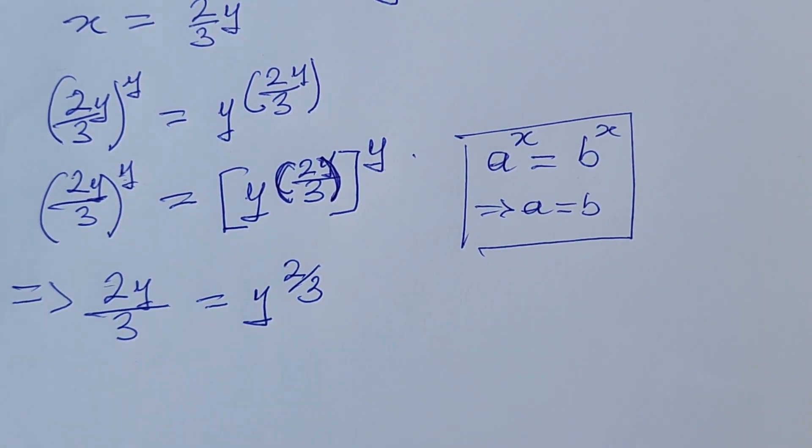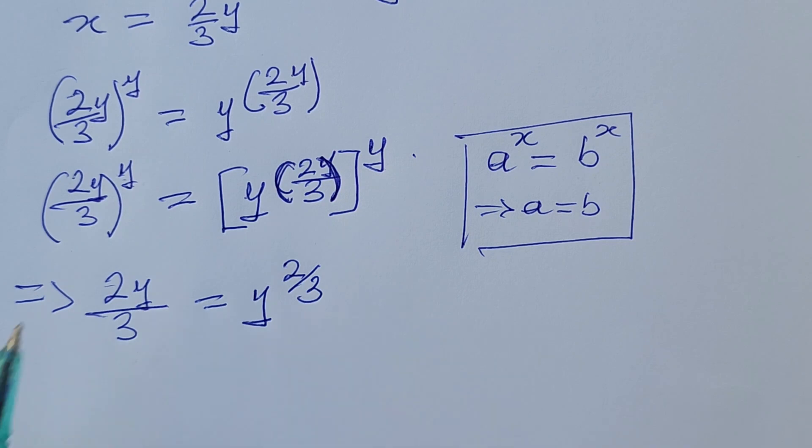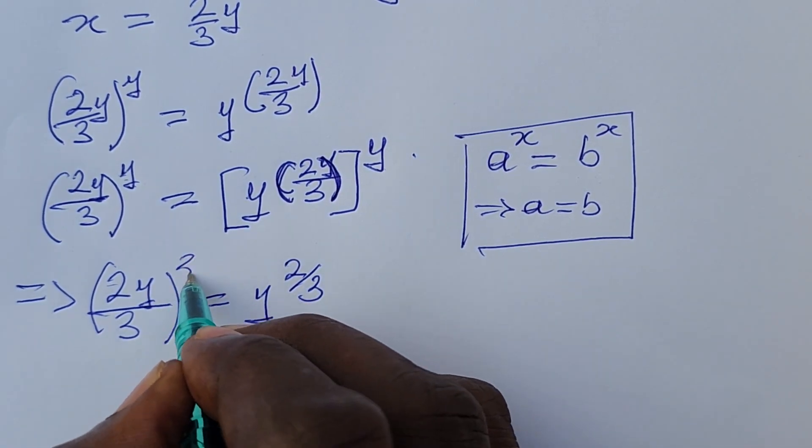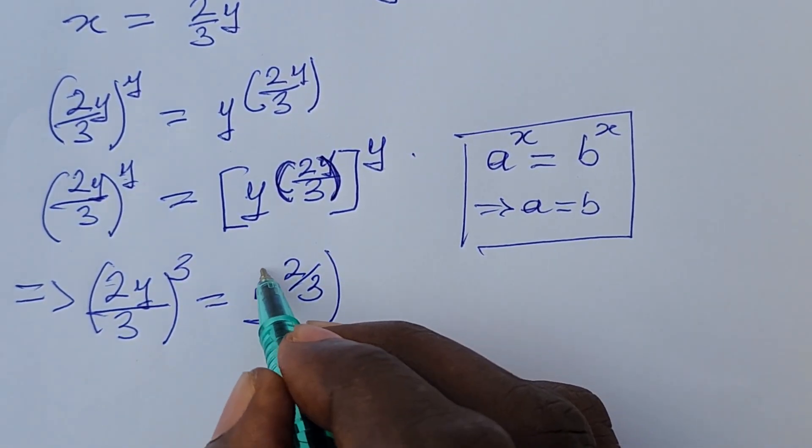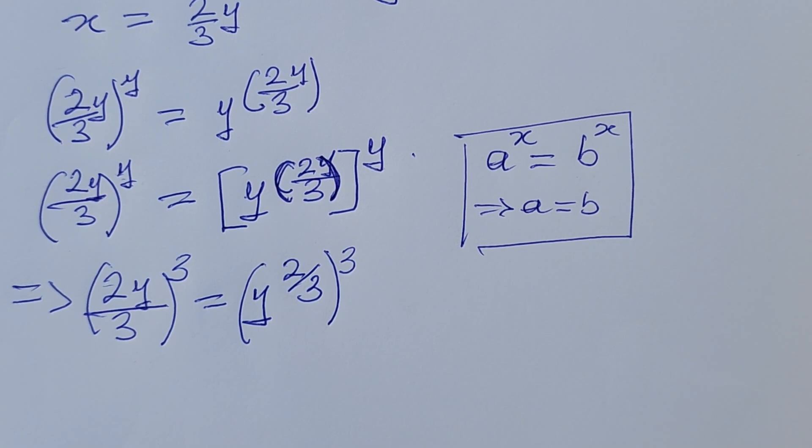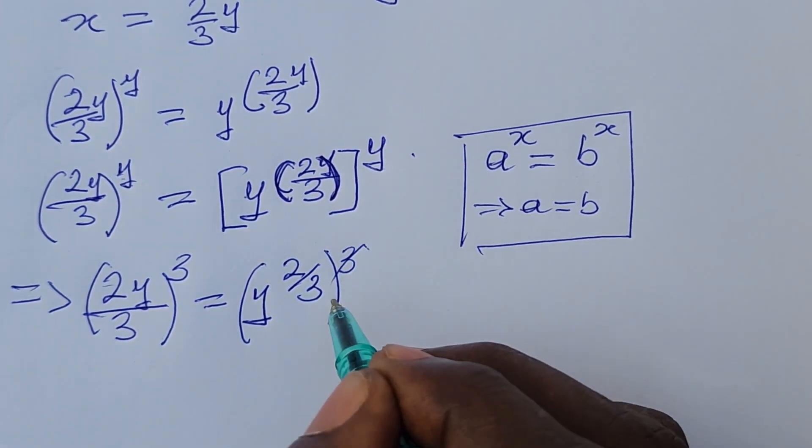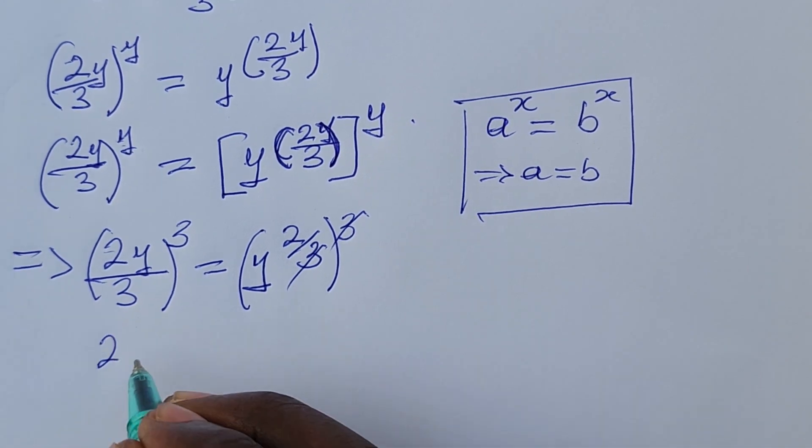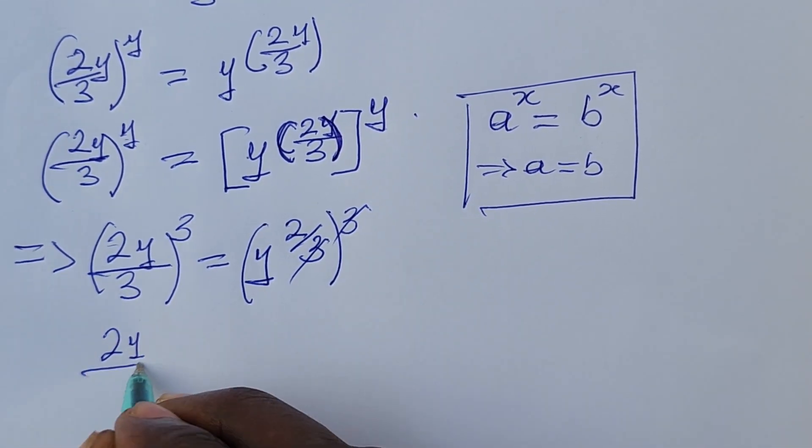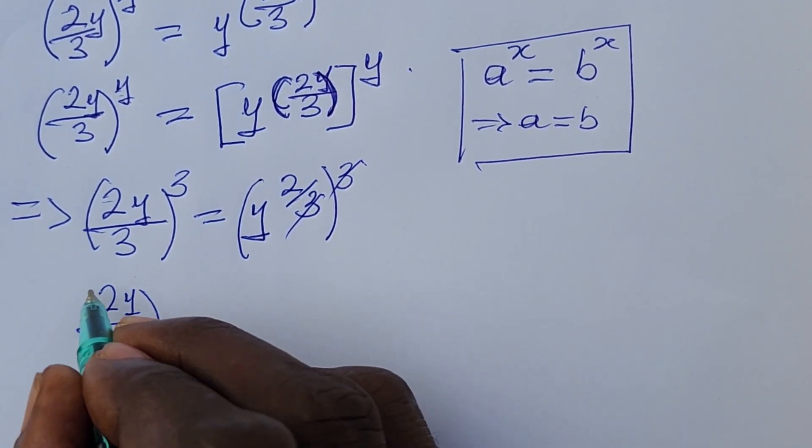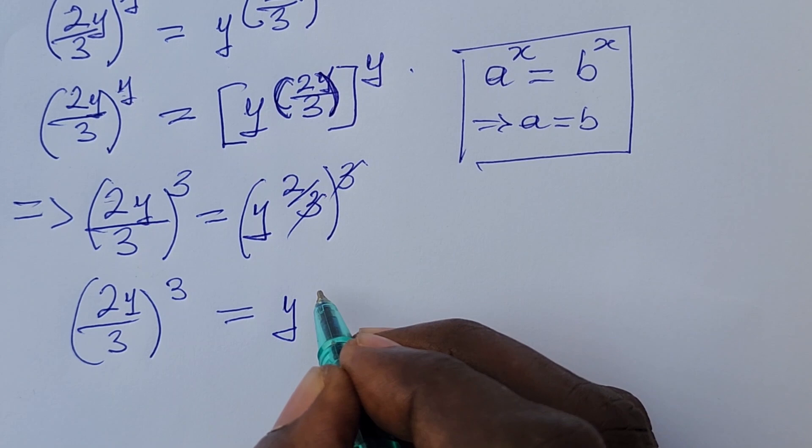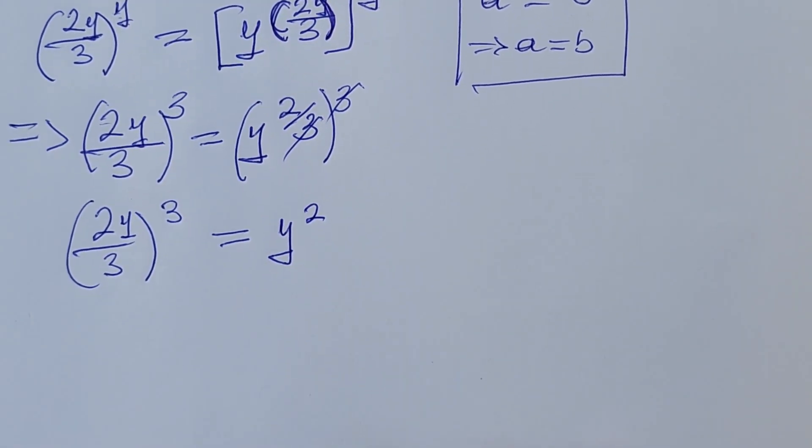All I need to do here is to take the cube of both sides to eliminate this cube root. So I want to cube both sides of the equation. So this 3 goes with this, so we are left with 2y over 3 all to the power of 3 equals y squared.